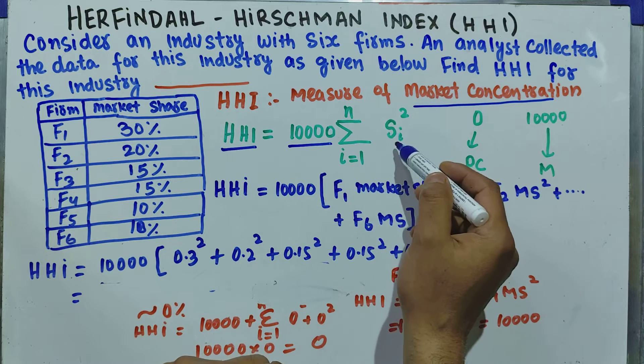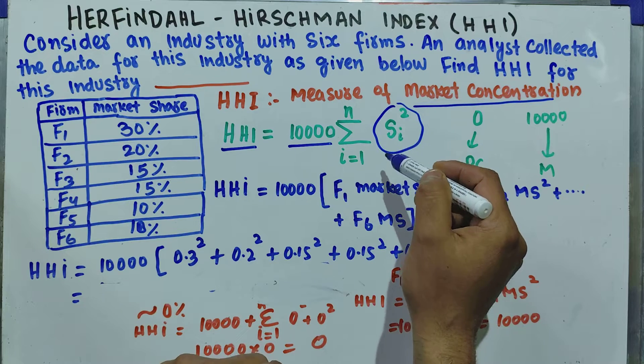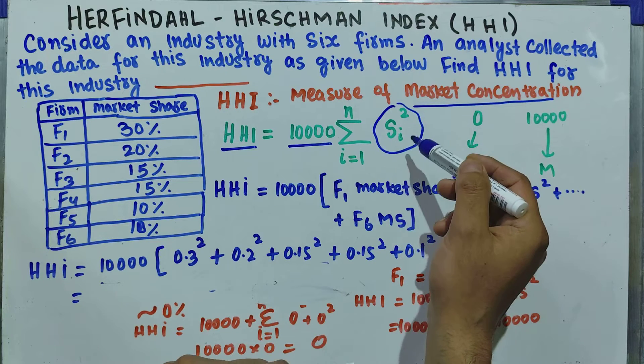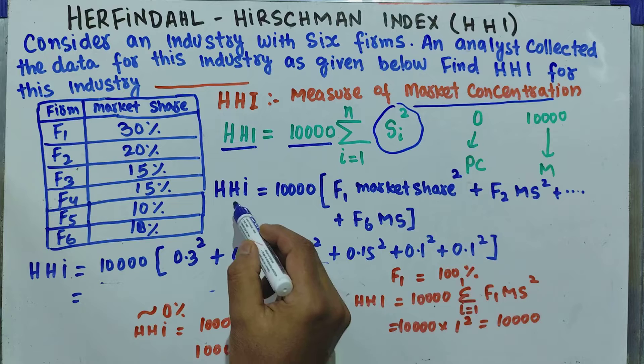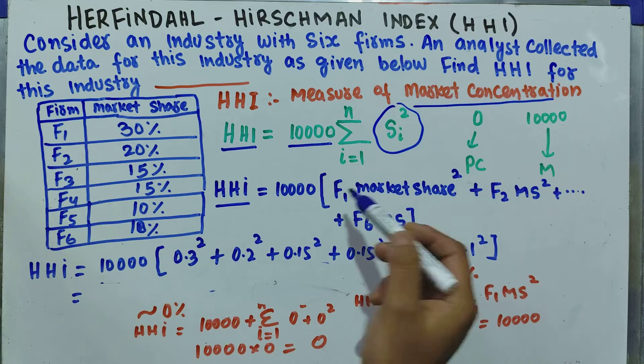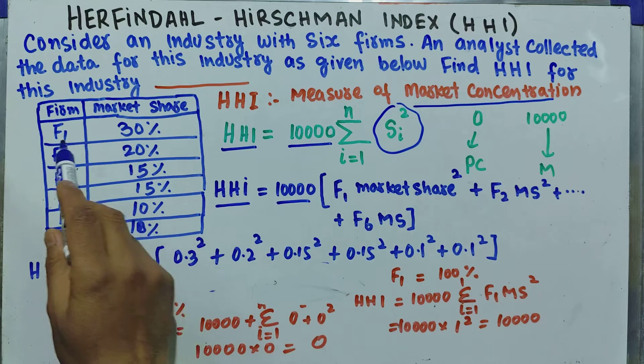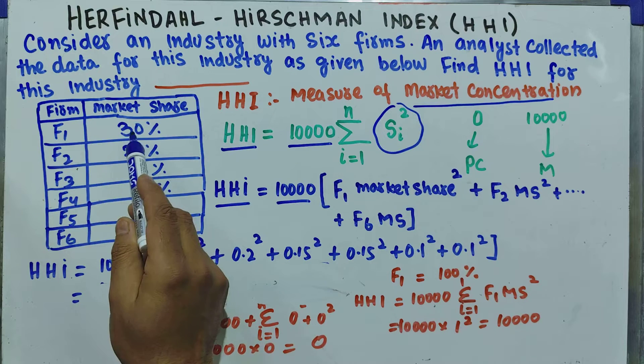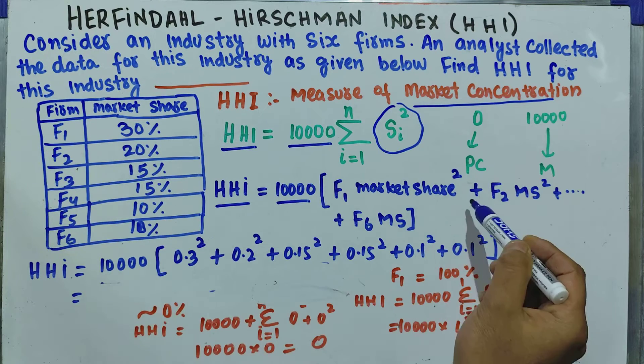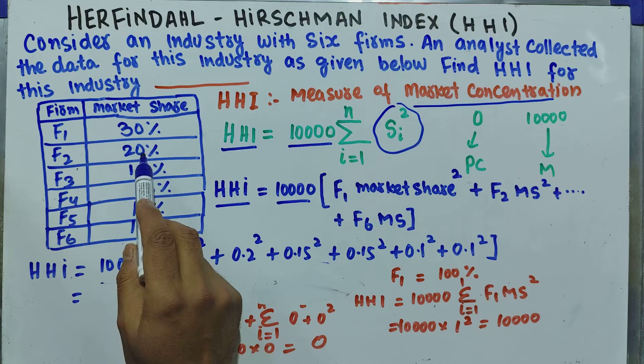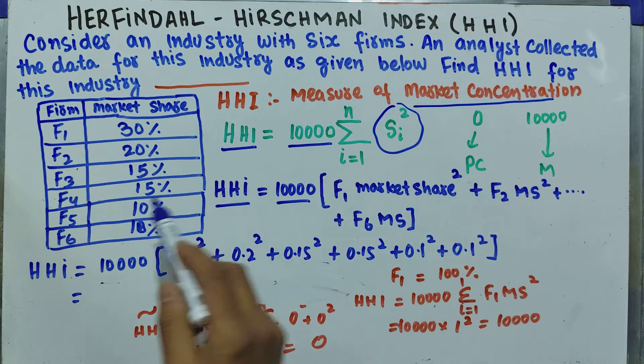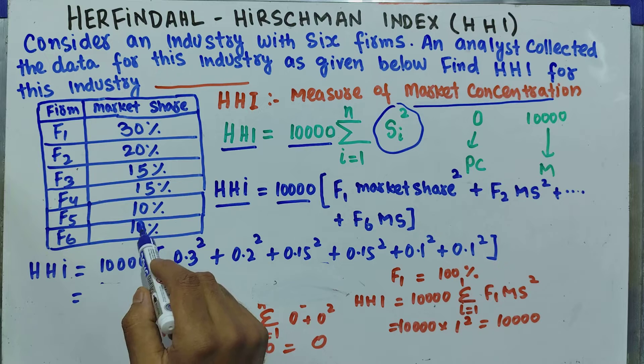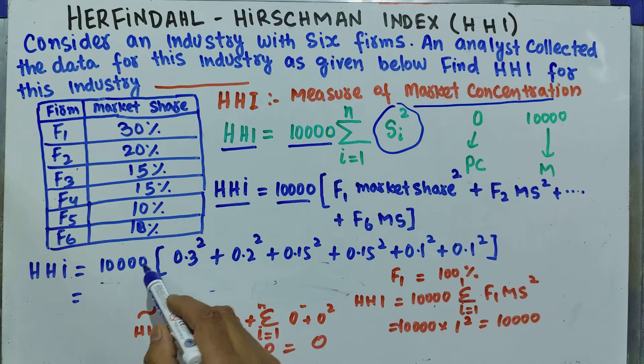In this case, our HHI will be equal to 10,000 times the market share of firm one squared plus market share of firm two squared, plus so on, up to market share of firm six squared. That equals 10,000 times the sum.